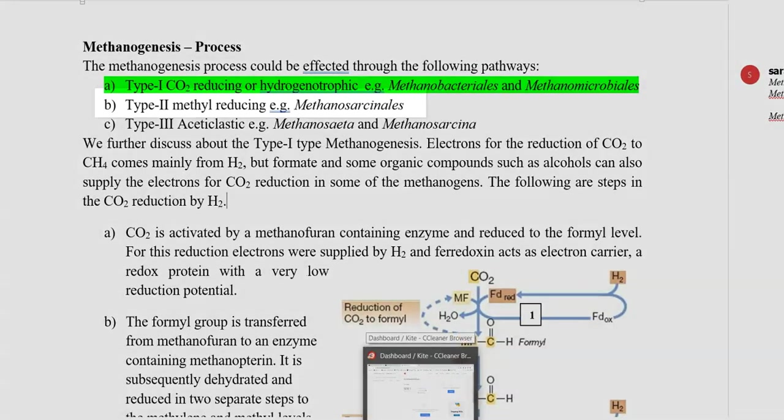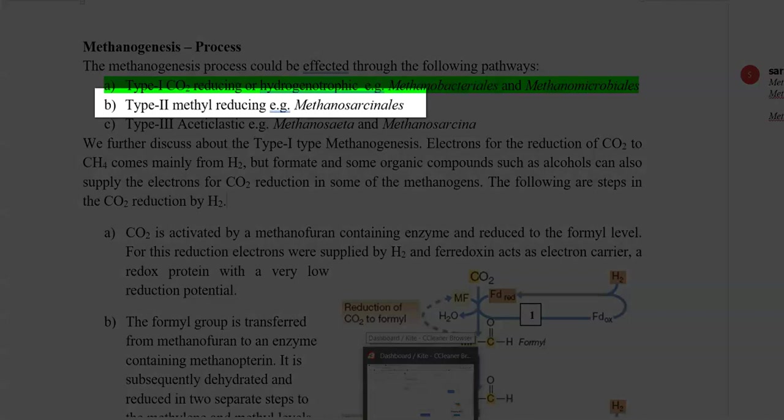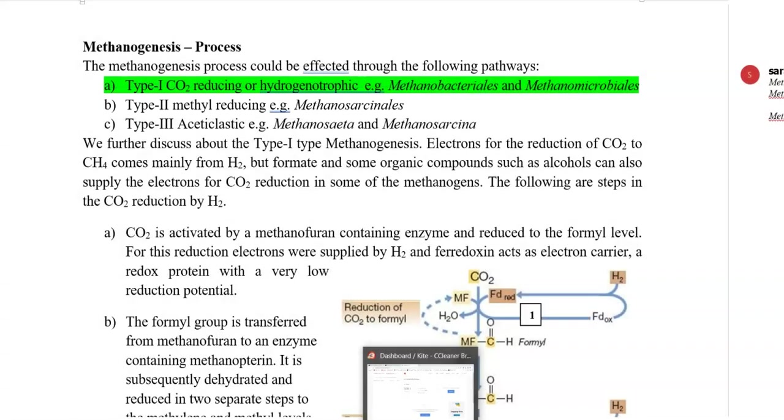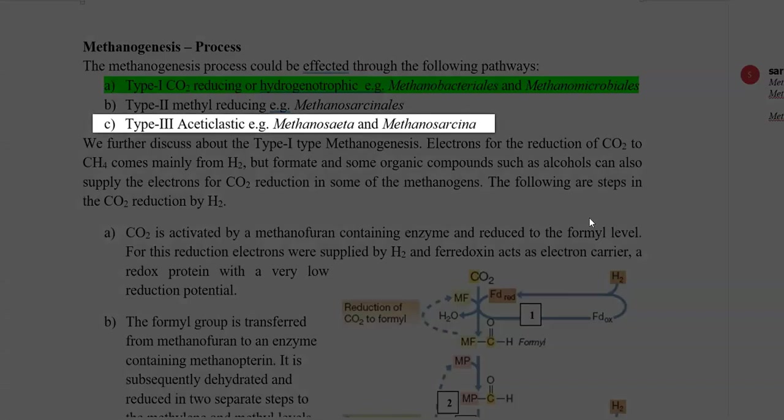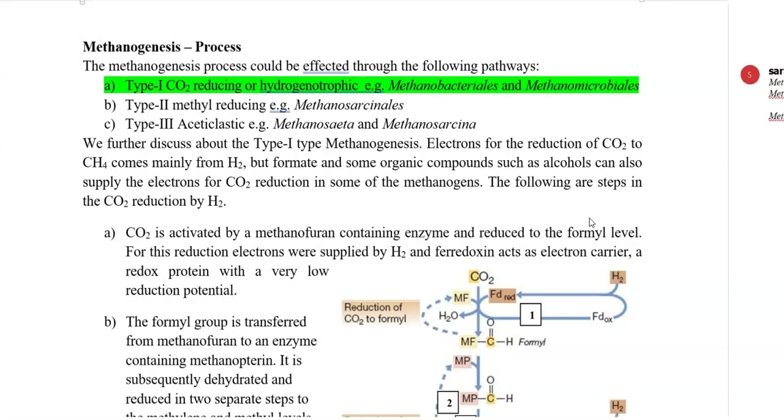The second category refers to methyl reducing group of methanogens. Most organisms under the order Methanosarcinales are methyl reducing in nature. The third group comprises acetoclastic group of methanogens. Here, classical examples include Methanosaeta as well as Methanosarcina genera.